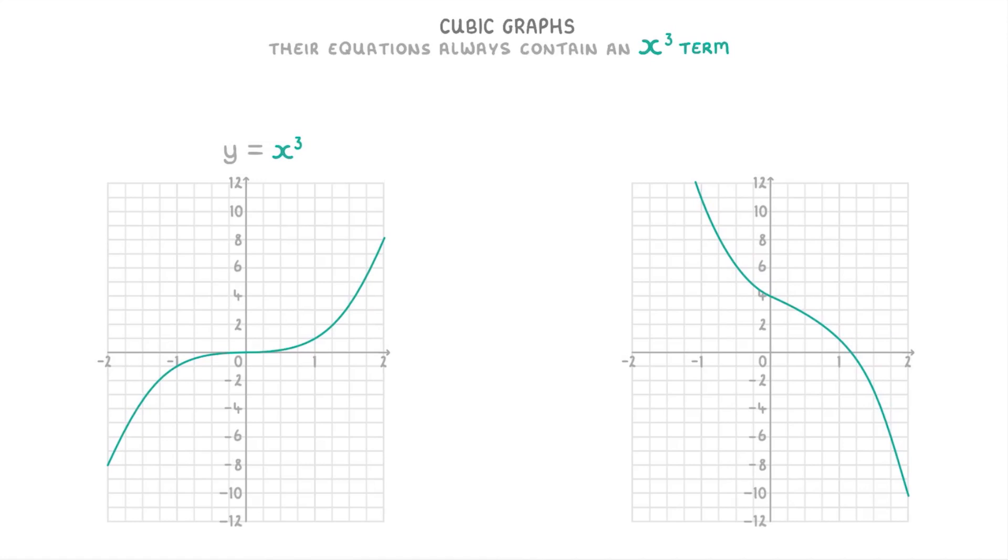Their equations can also contain other terms though. For example, this one on the right is y equals minus 2x cubed plus 2x squared minus 3x plus 4.